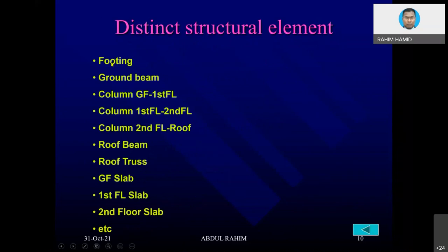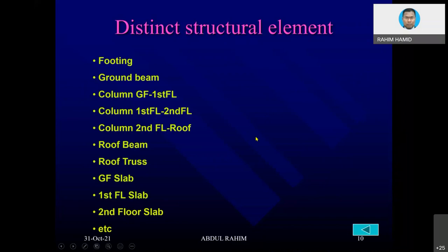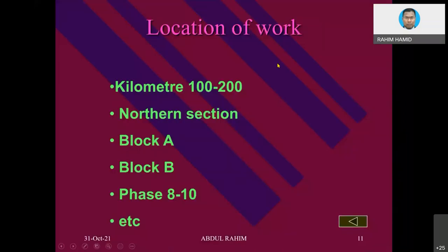Distinct structural element: in building construction we have footing, ground beam, columns, and then different floor columns, roof beams, roof trusses, ground floor slab, first floor slab, second floor slab, etc. That is what we mean by structural element. In Malaysia we build mostly using the structural frame — we do not use so much brick wall, as brick walls normally do not have columns.